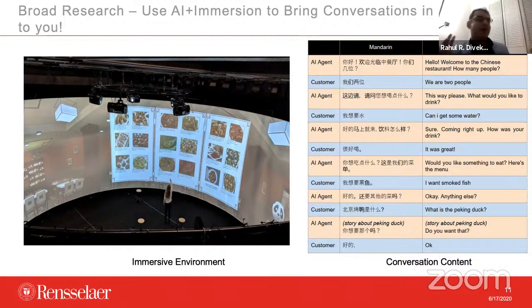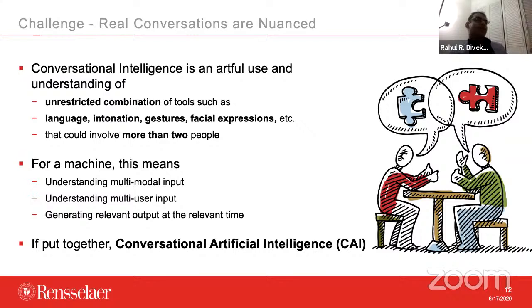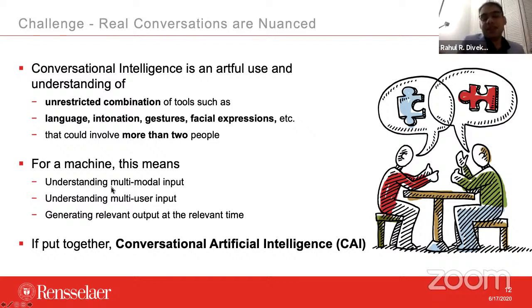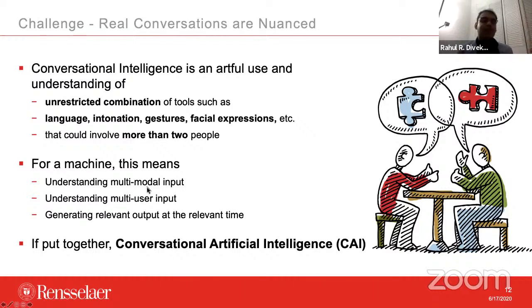Going further, I focus on the AI aspect. Real conversations are nuanced — they have many tiny things. When two humans communicate, they use language, intonations, gestures, and facial expressions, and there's usually more than two people. This is a really hard challenge for machines, because they have to understand not just speech. Remember, Alexa and Siri hear only speech and make so many blunders. An AI agent that really wants to come off as almost human needs to understand multiple modalities — not just speech, but gestures and all of those others.